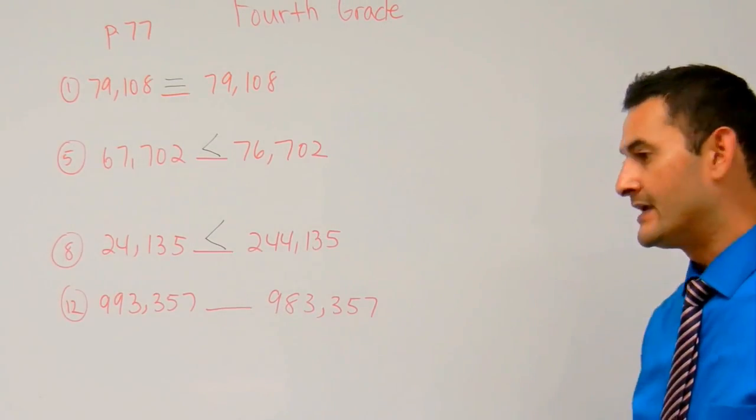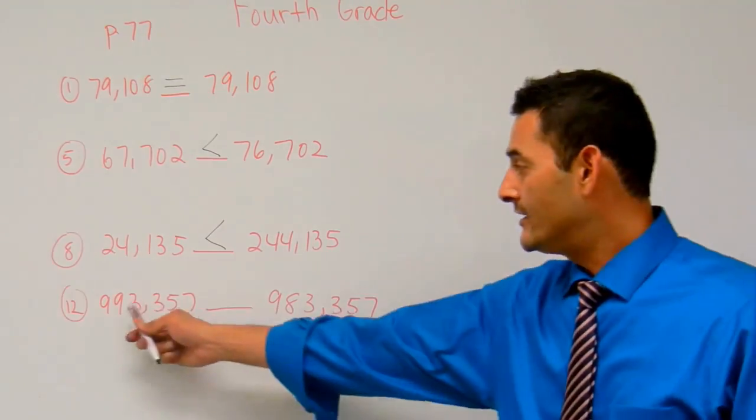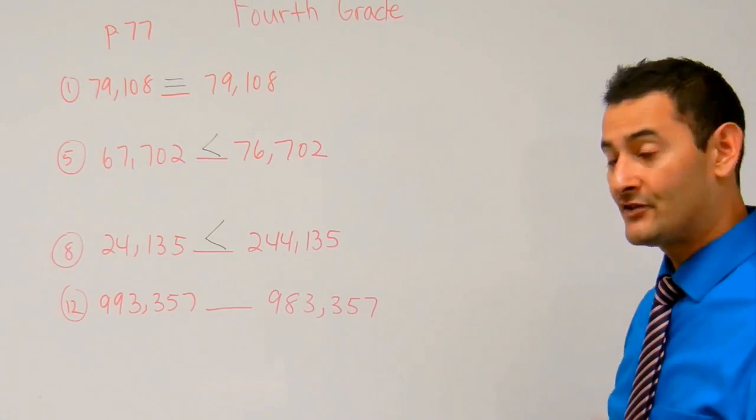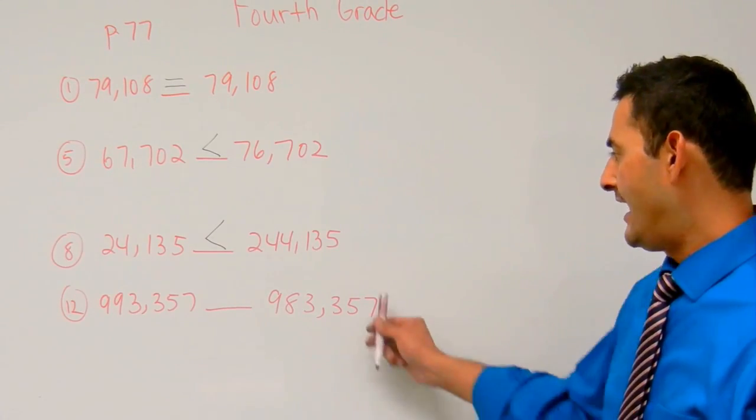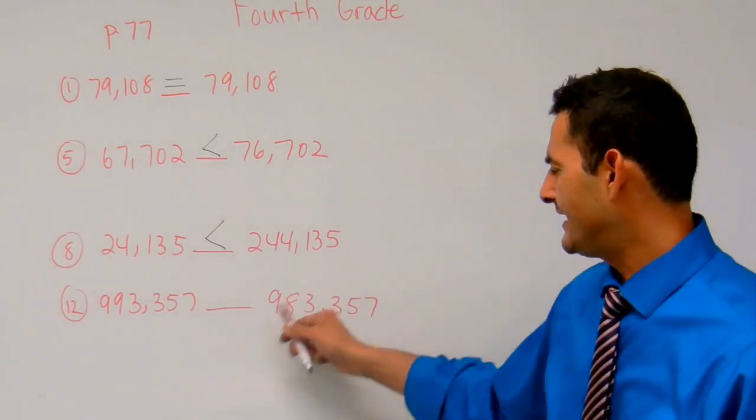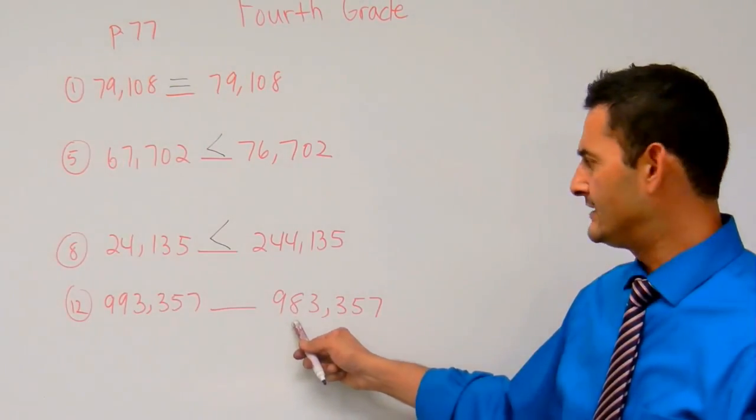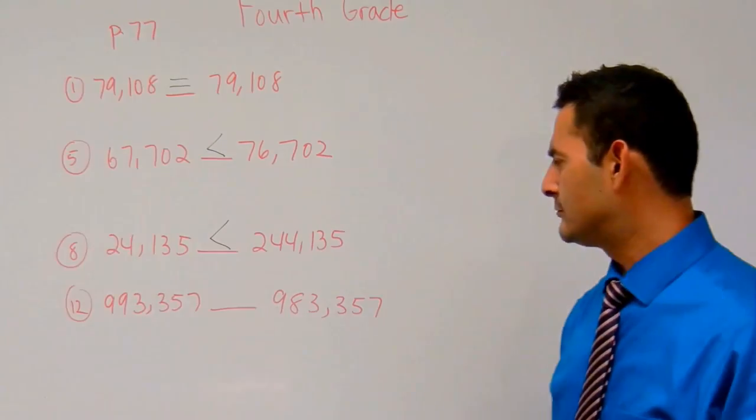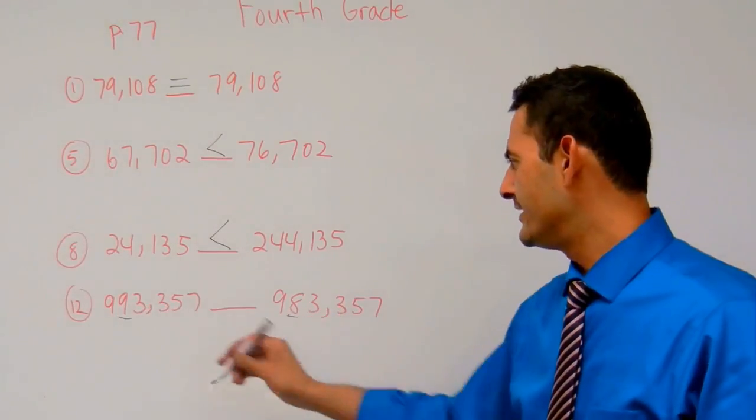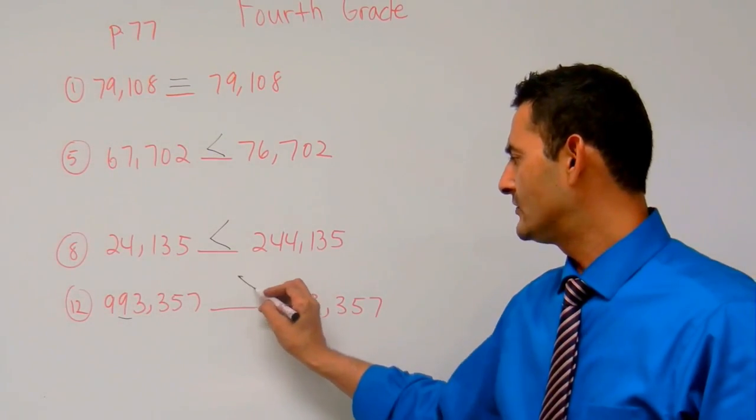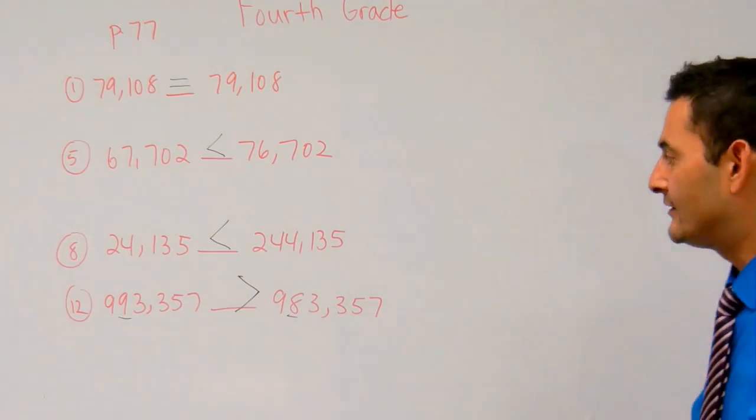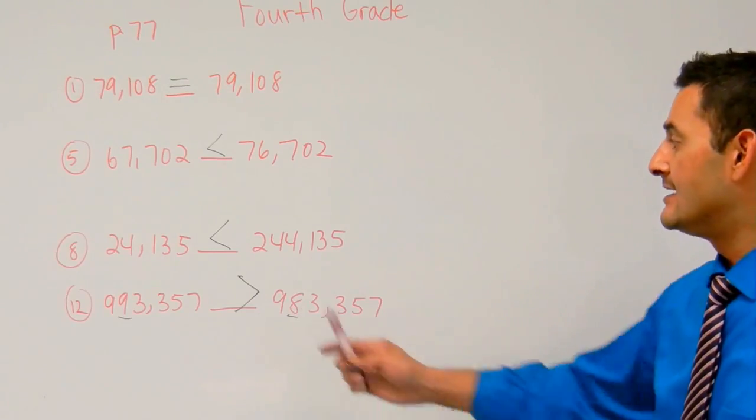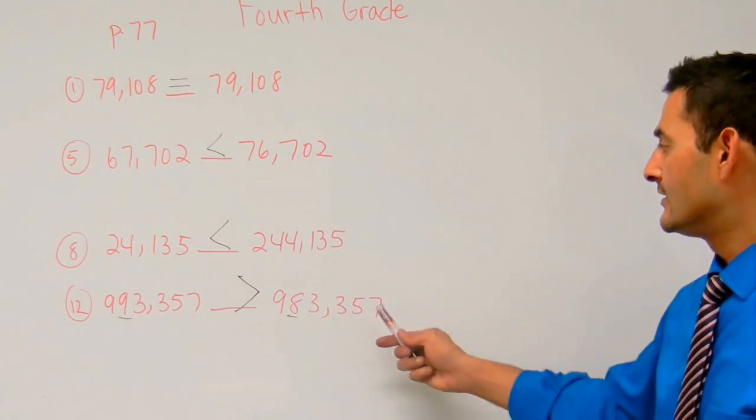Now let's take a look at number 12. Number 12 reads 993,357 and then 983,357. I've got the exact same numbers here, and then in the ten thousands place, this 8 is smaller than this 9. We have 9 in the hundred thousands place, so I'm really comparing these two right here. This is greater than that, so it's going to be greater. So 993,357 is greater than 983,357.